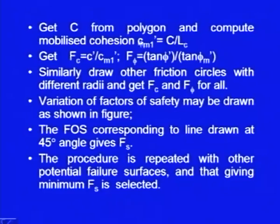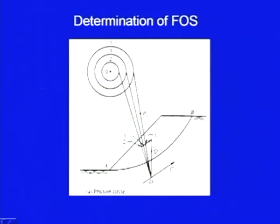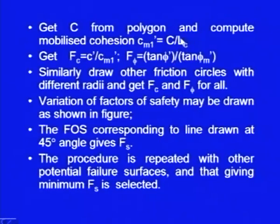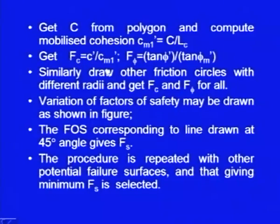Get C from the polygon and compute the mobilized cohesion c_m1'. Here c_m1' stands for the first friction circle and C is the value of cohesion computed from here. So this is the C value: C divided by the chord length L_c gives you the mobilized cohesion — the cohesion which is required to keep this wedge in equilibrium.